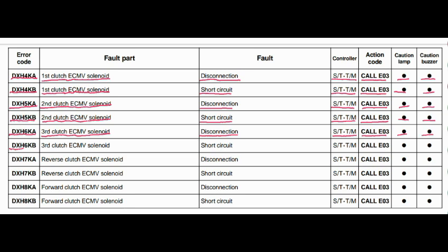Error code DXH6KB. The faulty part is the reverse clutch ECMV solenoid. The fault is disconnection. The steering and transmission controller is related to this fault. Action code is E03, caution lamp will blink, and caution buzzer will beep.